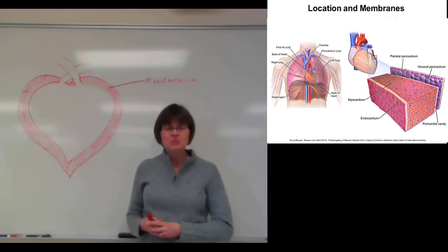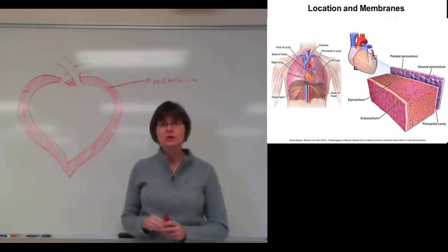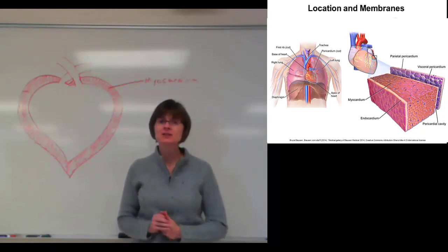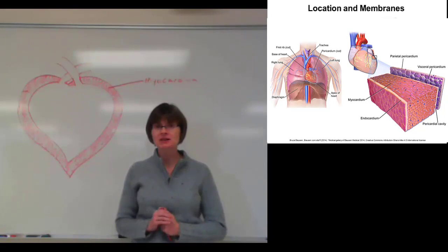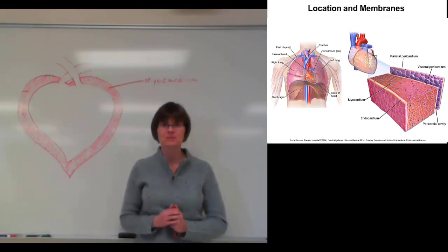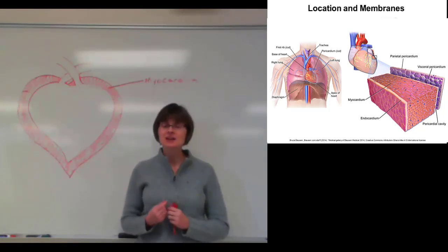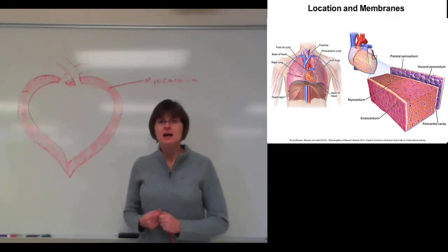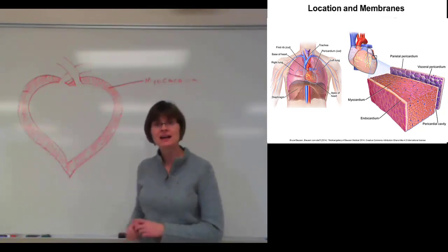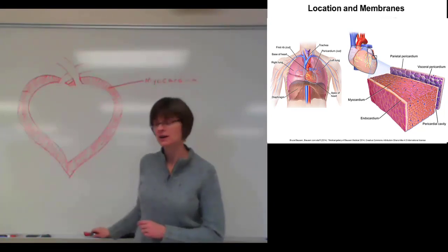In addition to the muscle, we have a really smooth serous membrane that lines the inside of the heart and goes around the outside of the heart. A serous membrane is made up of a layer of simple squamous epithelium — that's one layer of flat cells — held in place by a thin layer of areolar connective tissue. This is a really thin, really smooth layer. We call that membrane on the inside of the heart the endocardium, and I'm going to go ahead and add a layer of endocardium to my drawing.